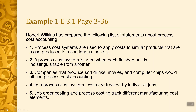We're going to determine whether each statement is true or false. Statement one: process cost systems are used to apply costs to similar products that are mass produced in a continuous fashion — that is true. Statement two: a process cost system is used when each finished unit is indistinguishable from another — and that is also true.